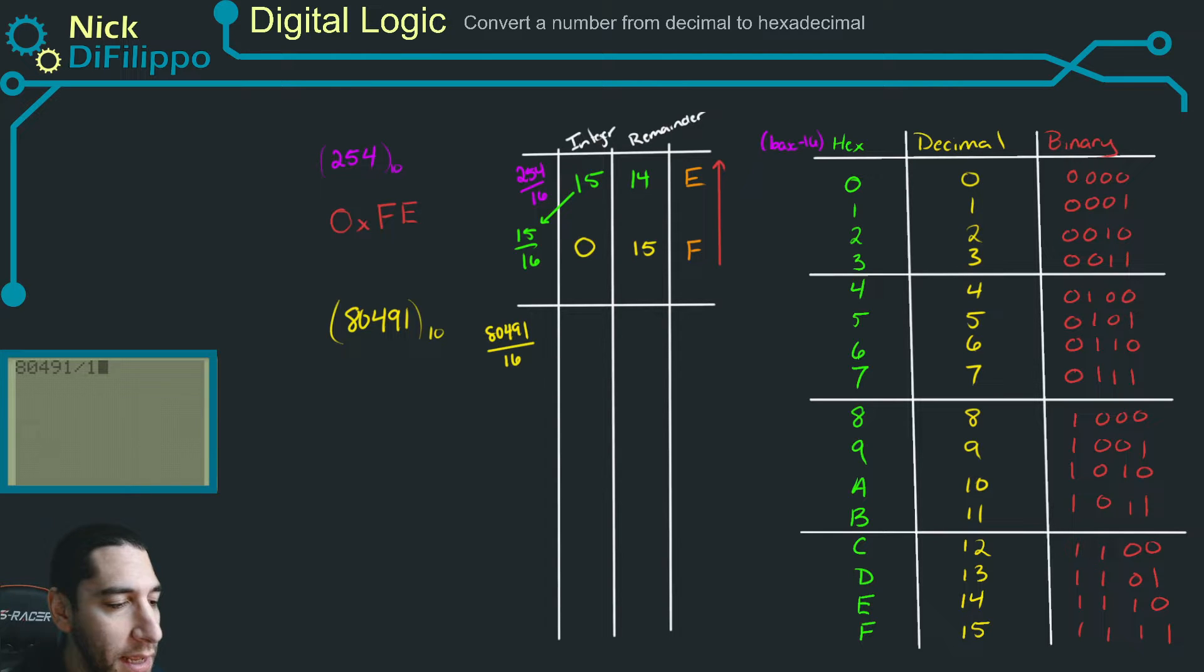And what we get is our integer is 5,030. And our remainder is going to be 16 times 5,030 and subtract these two numbers from each other. So 80,491 minus 80,480. And we get a remainder of 11.